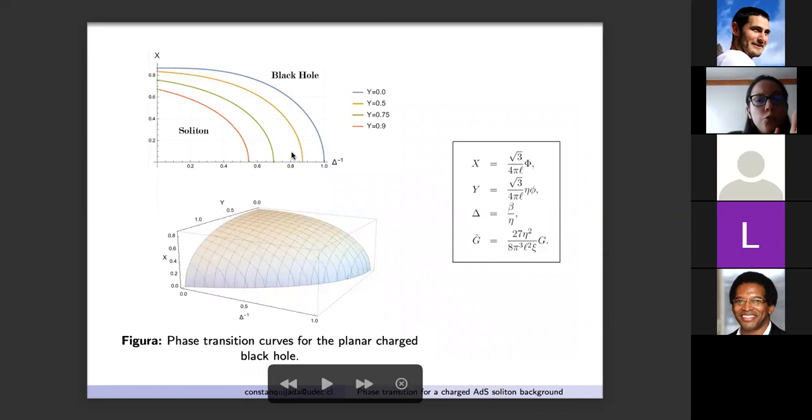The free energy is equal to the right hand side of equation seventeen where for simplicity we have used the redefinition that appeared in equation eighteen. Our results show that the phase transitions between the charged planar black hole and the charged soliton depend on the magnetic flux, the electric potential, and the temperature. To study these phase transitions we plot the magnetic flux in terms of the temperature for different values of the electric potential.